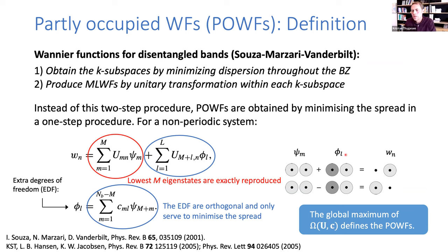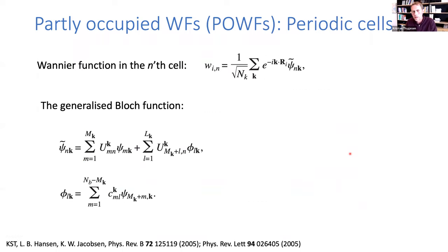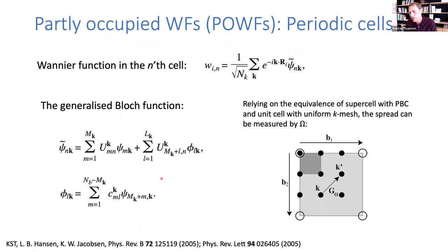Here's an illustration for a simplified H2 molecule: we have a bonding orbital, and then we find an anti-bonding orbital up in the set of unoccupied orbitals. When we sum and subtract them we get the original atomic orbitals back — that's the simple idea behind this. This can also be formulated for periodic cells, where we write the Wannier functions in the usual form, summing over generalized Bloch states, making unitary transformations within a space consisting of the lowest m eigenstates plus a set of extra degrees of freedom, optimized for each value of k.